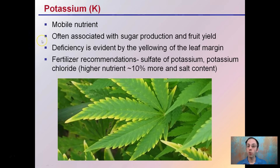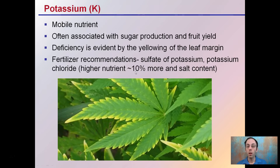Potassium is a mobile nutrient often associated with sugar production and fruit yield. Deficiency is evident by yellowing of the leaf margins — the very outside edges of the leaves, as we see in this image. Sulfate of potassium or potassium chloride are recommended as fertilizer. Keep in mind potassium chloride has higher nutrient content — around 60% potassium — but also greater salt content than potassium sulfate, which is about 50% potassium. Knowing the plant is potassium deficient lets you target the right fertilizer to prevent recurrence.